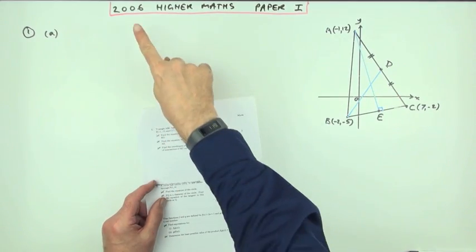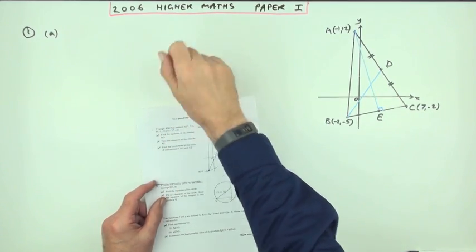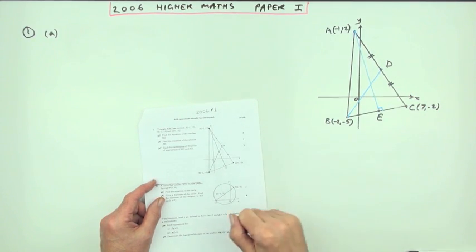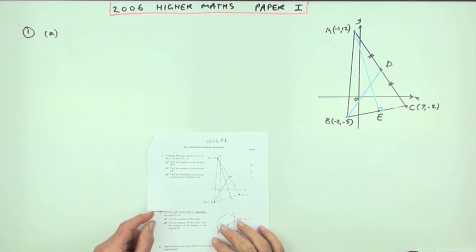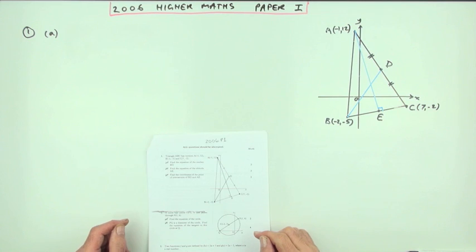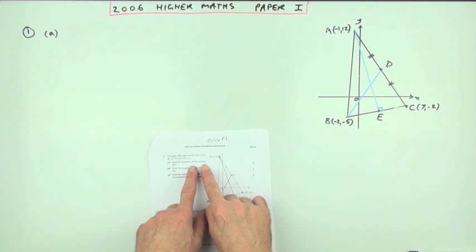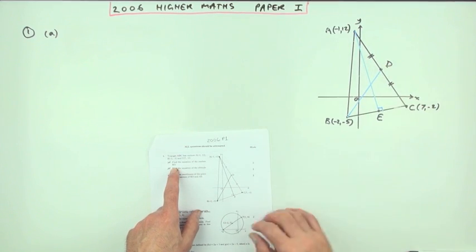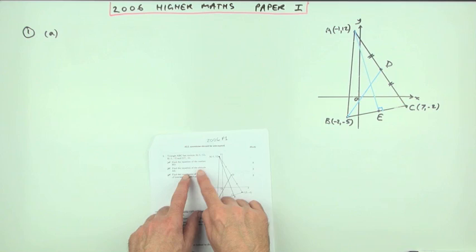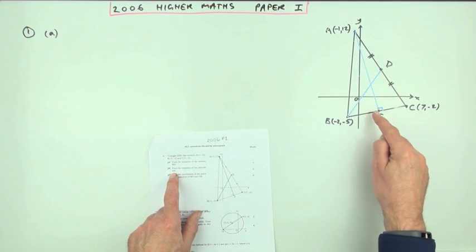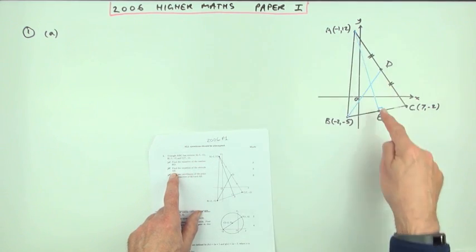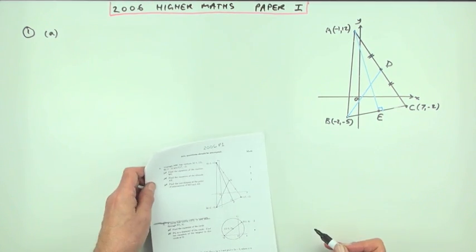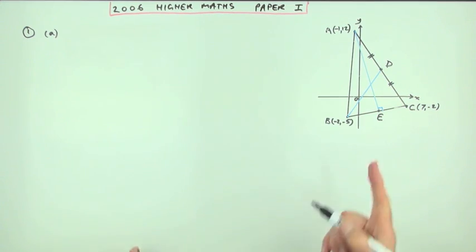Number one from the 2006 Higher Maths paper one: lines in a triangle — two particular lines, a median and an altitude. You don't even need to know which is which because it says the median BD — D is the middle of that side — and the altitude AE. A reminder: the altitude means it hits the side at right angles.